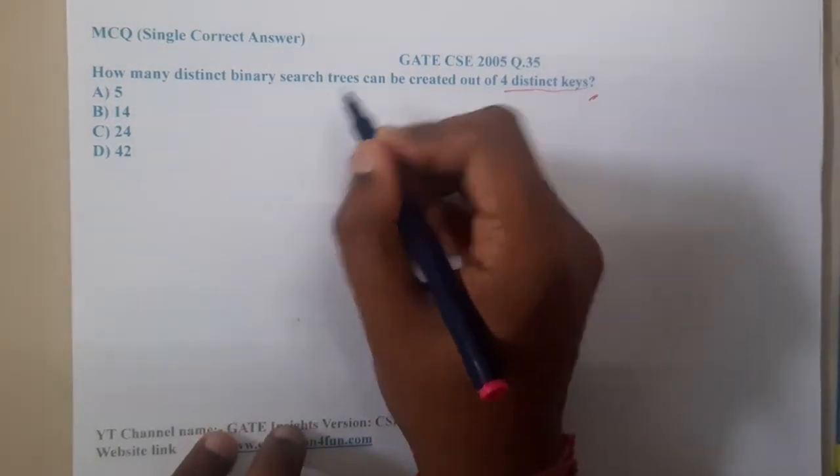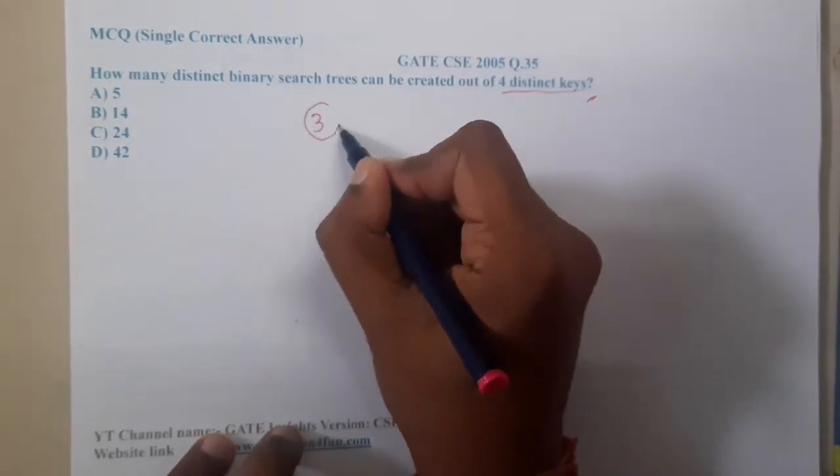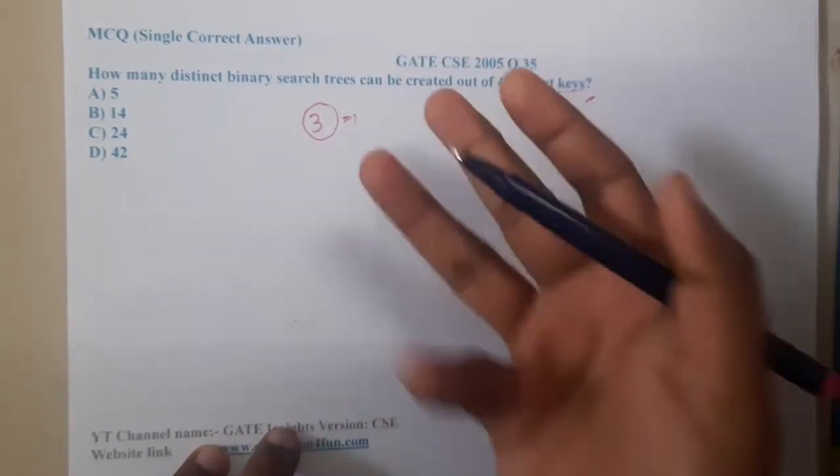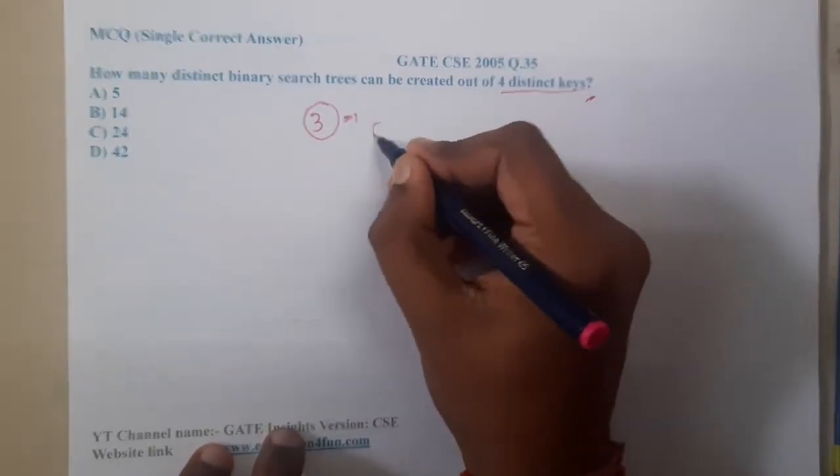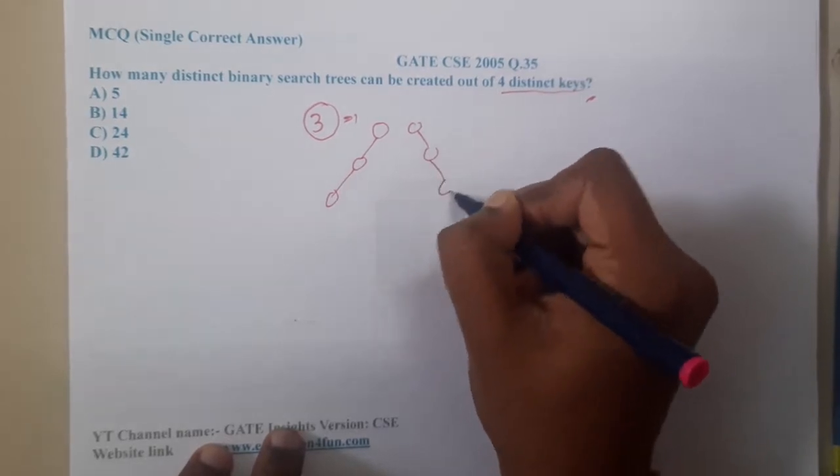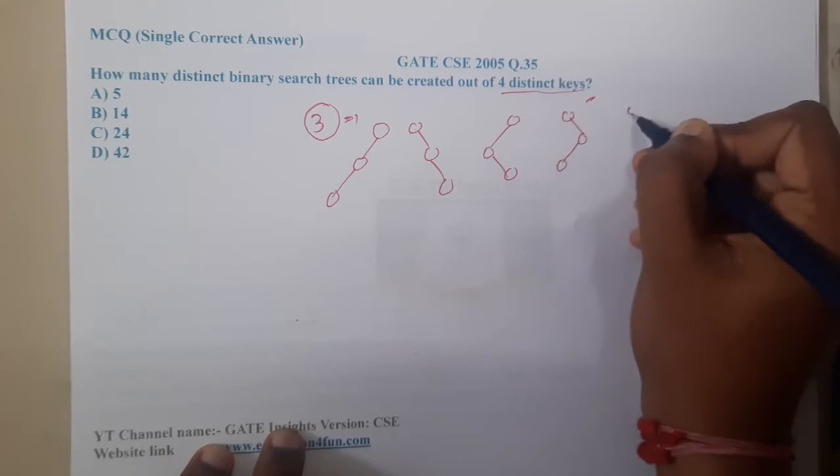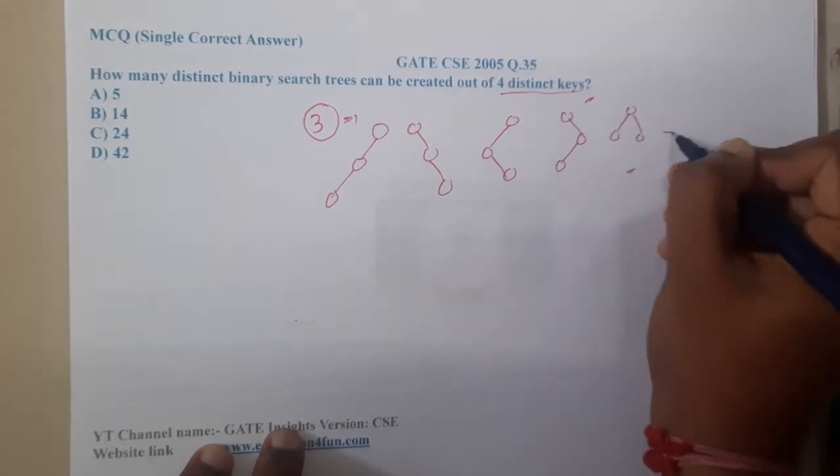In previous years, like before 2005, the question has been asked for three nodes. So at that time, three nodes is easy, right? For three nodes, what will be the combination? It might be left skewed, or it might be right skewed, it might be zigzag, or it might be this way zigzag, or it might be completely in a normal balanced way.